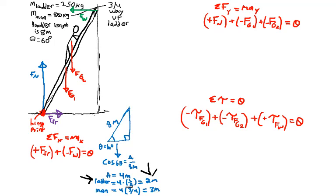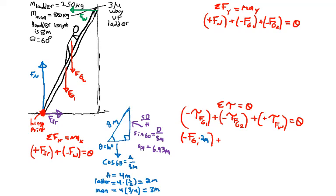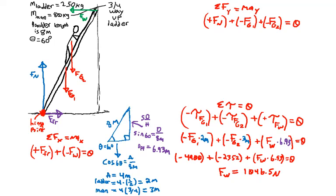And then the man is three-fourths of the way up, so the effective lever length is three meters for them. In terms of the opposite side, 6.93 is the effective lever length for the wall force. When we set this up, we've got the force gravity one—a clockwise rotation—and then force gravity two is clockwise as well, so both of those are negative. And then we have the wall force at 6.93—that's a counterclockwise torque.